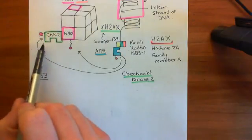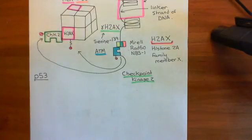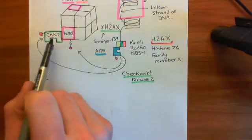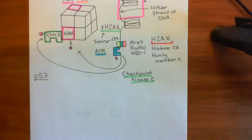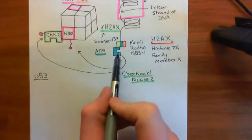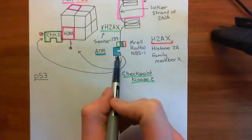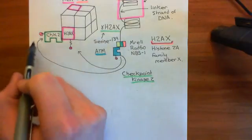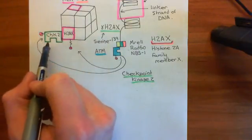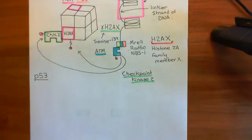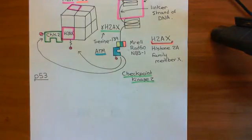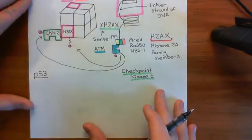One of the proteins that can be recruited to gamma-histone 2AX, once it's been phosphorylated, is CHK2, which stands for checkpoint kinase 2. What then happens is the active ATM enzyme is also going to phosphorylate checkpoint kinase 2, leading to its activation. Once activated, checkpoint kinase 2 is a serine-threonine kinase. These two now active serine-threonine kinases — ATM and checkpoint kinase 2 — are going to activate P53.